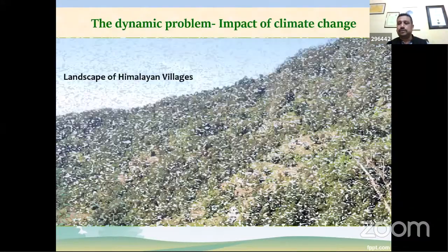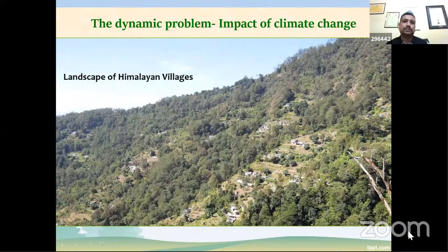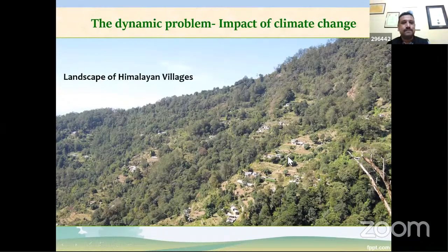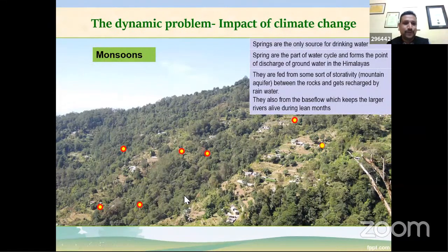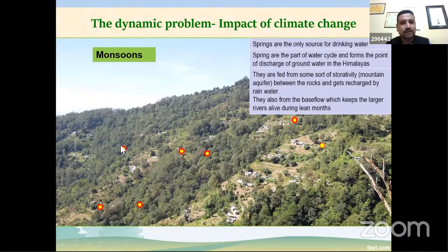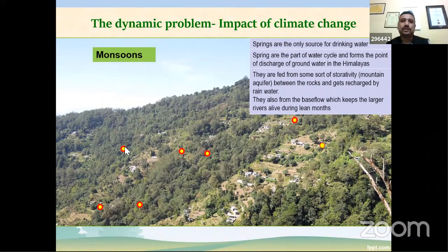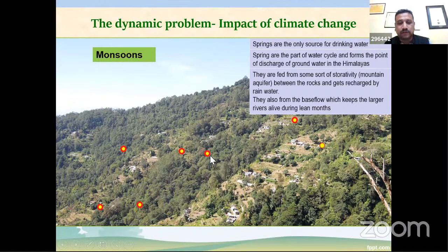In a typical Himalayan village you can see households and footpaths. During the monsoons you see dots across the landscape — these are the springs from which people get water for domestic and irrigation needs. Springs are the only source of drinking water in our landscape. They are part of the water cycle — a form of groundwater in the Himalaya, fed from some kind of storativity we call a mountain aquifer, recharged by rainwater.